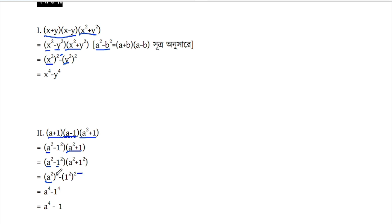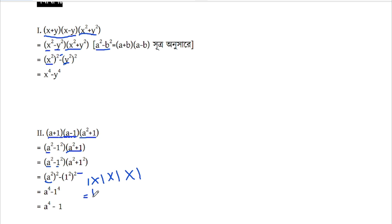1 is over 4, 1 is over 4. 4 is over 4, 6 is over 4. 6 is over 1. What is it? Delay to the power 4 minus 1. Delay to the power 4 minus 1.